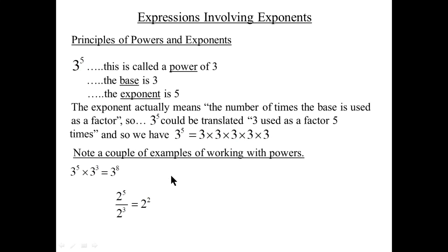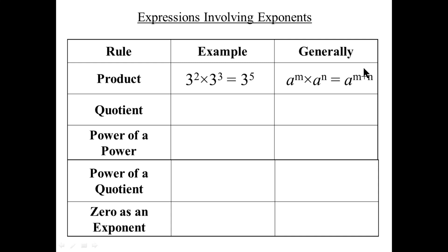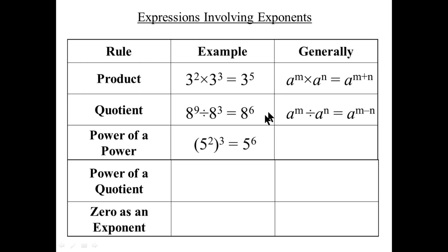I've compiled all the rules into a chart. Product rule: when you multiply powers of the same base, keep the base and add the exponents — in general, a to the m times a to the n is a to the m plus n. Quotient rule: eight to the nine divided by eight to the three — keep the base eight, subtract: nine minus three is six. In general, a to the m divided by a to the n is a to the m minus n.